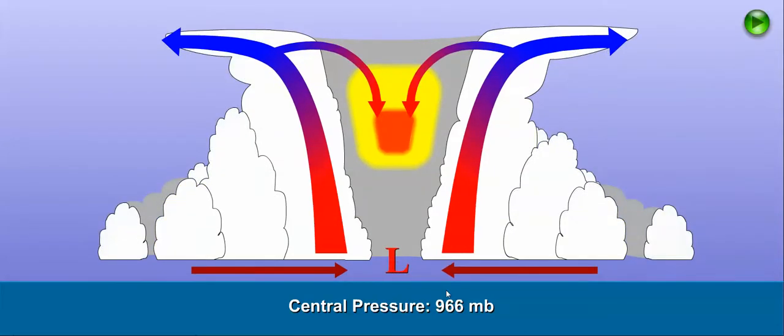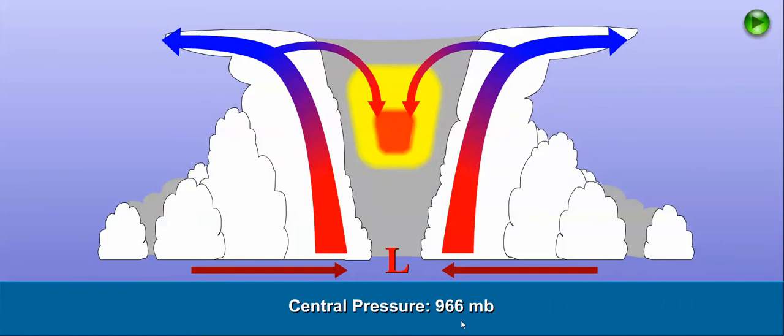As the surface pressure drops, now at 966 millibars in our example, the pressure gradient across the storm increases, which causes wind speeds to increase. So low-level air rushes in toward the center of the storm even faster.